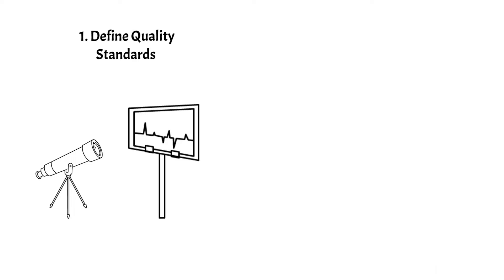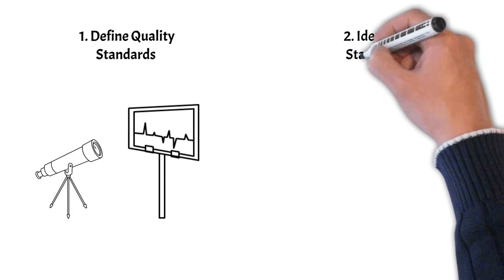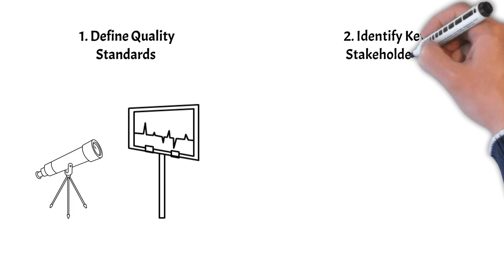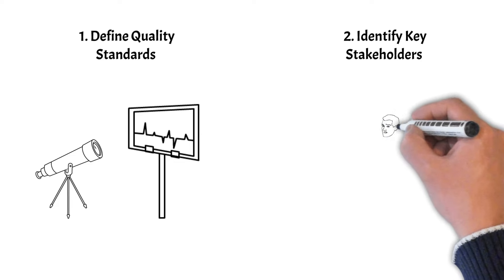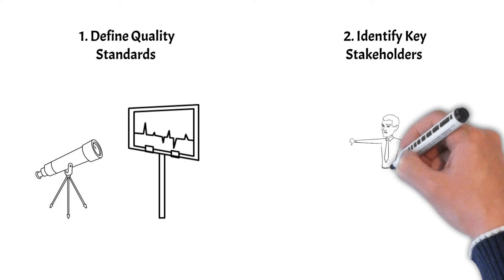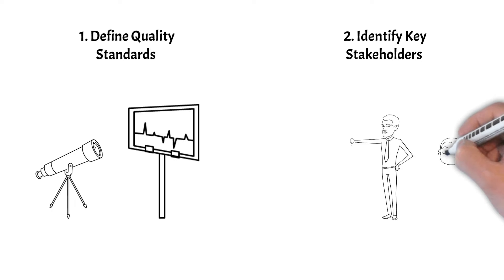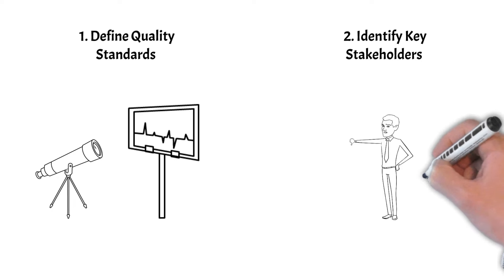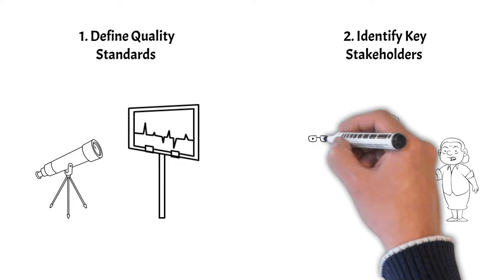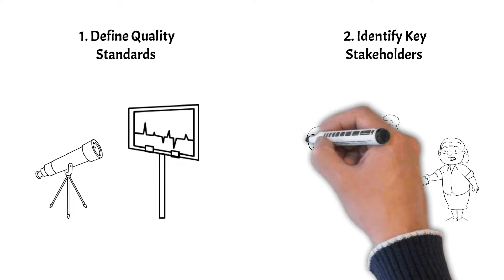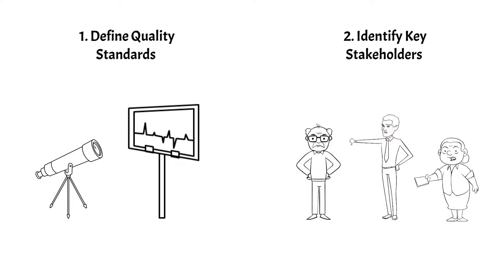Second, identify key stakeholders. Identify all the key stakeholders and engage them in the quality definition process. Gather their input on what they consider quality in the context of the project — their perspectives are invaluable. If you need a guide on how to manage stakeholders, click on another video we created on our channel.